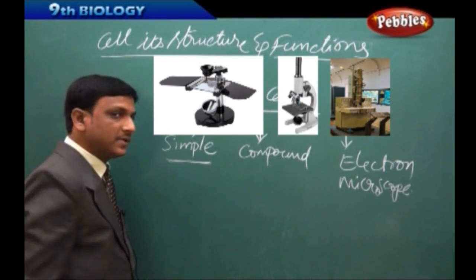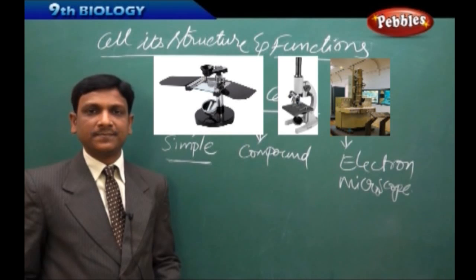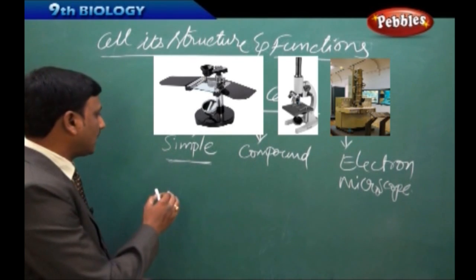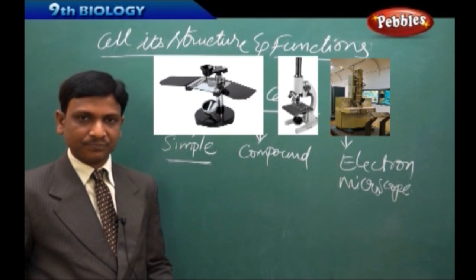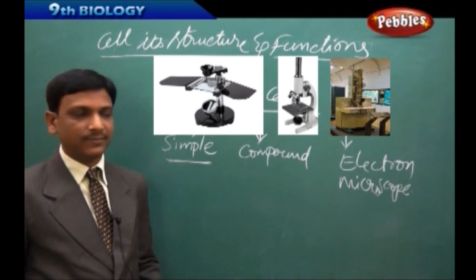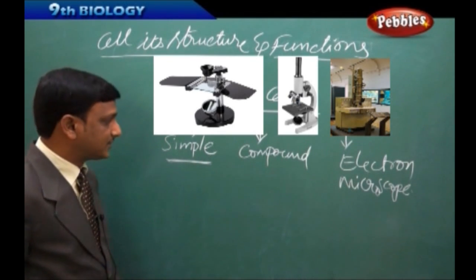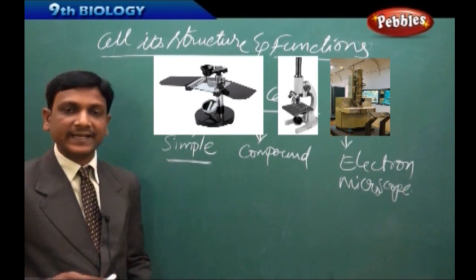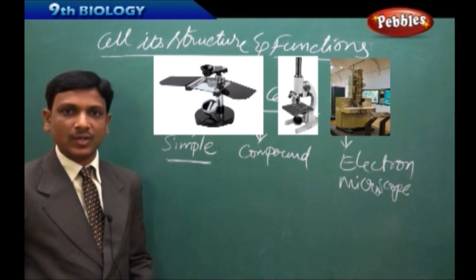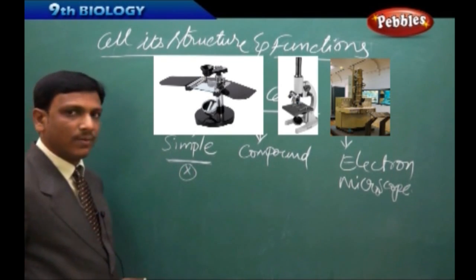So the simple microscope is a very simple instrument which is used to observe the stomata or some of the outline features of a cell. If you wanted to observe some kind of bigger plant cells or animal cells, we can use the simple microscope to observe. But it is not possible to observe the inner parts. The cell organelles like nucleus or cell wall or so on. Such kind of things we cannot see in a simple microscope.